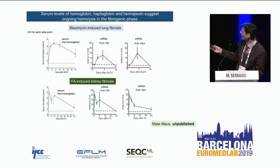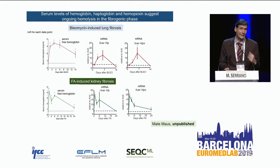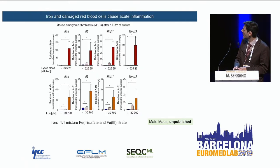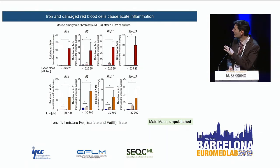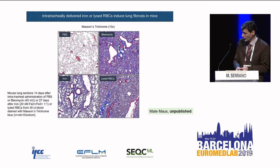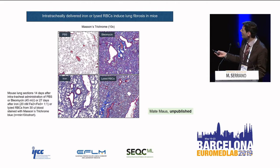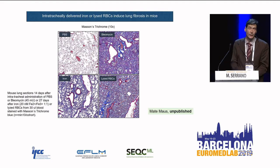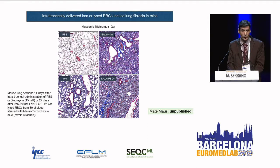Iron itself can induce senescence in vitro very efficiently, and it can also produce fibrosis very efficiently in vivo. Injecting bleomycin is a typical fibrosis model, but injecting iron or lysed red blood cells produces similarly massive fibrosis — indicating that iron itself is sufficient to drive the process.